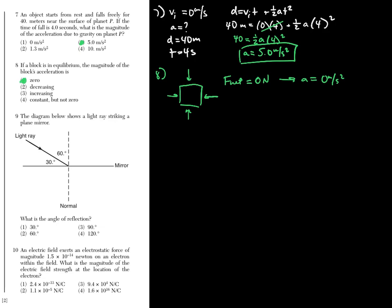Number nine involves reflection. Reflection means the angle of incidence equals the angle of reflection, but both angles are measured relative to the imaginary normal line perpendicular to the surface. The angle of incidence is 60 degrees, so the angle of reflection is also 60 degrees. The answer is choice two.